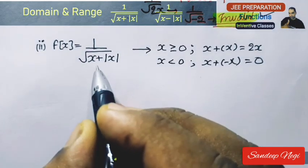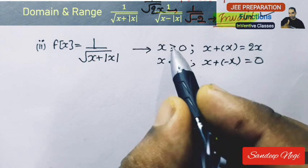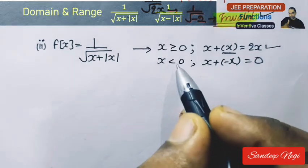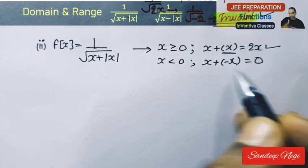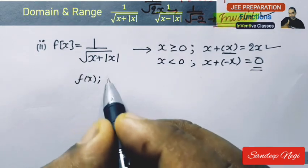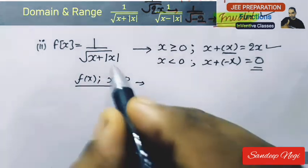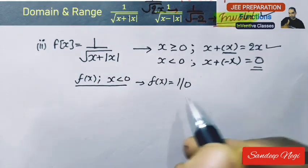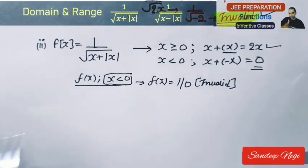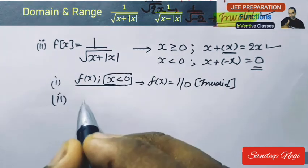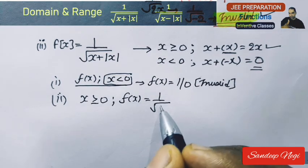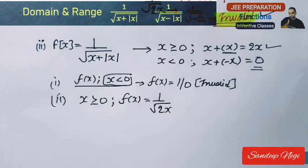Now let's take a new question on the same concept — the second part. Similarly, when x is 0 or greater than 0, you get positive x, so x plus x becomes 2x. And when x is less than 0, you get minus x, which gives 0. Now let's see: for the case where x is less than 0, the function becomes 1 upon 0 — which is an invalid function. So x can never be less than 0.